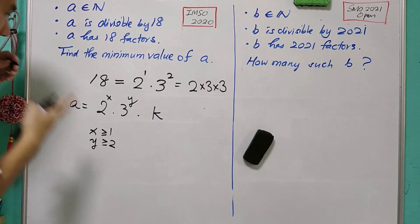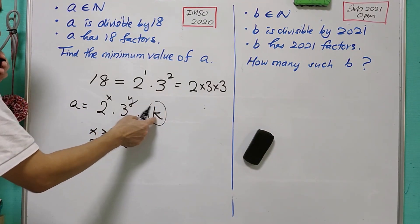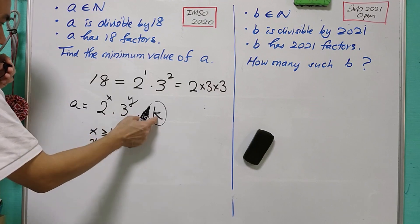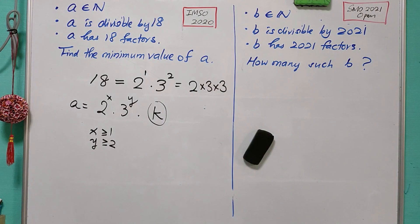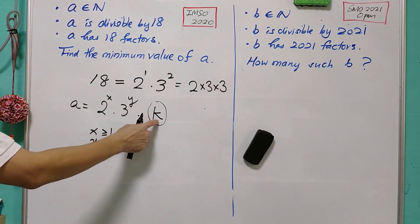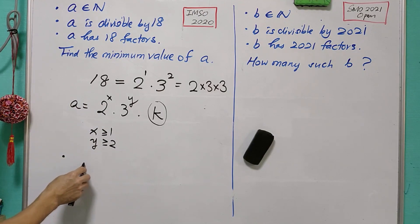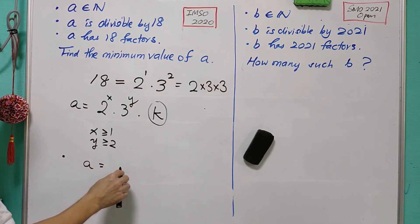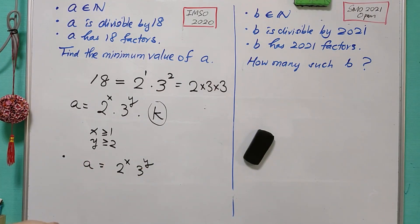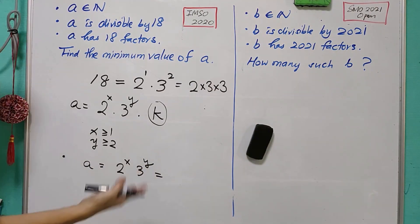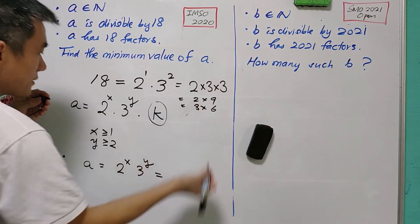There are two cases to consider: Case 1, A contains only factors of 2 and 3, so A is exactly 2 to the power of X times 3 to the power of Y. There are a few ways to choose X and Y such that the total number of factors equals 18, since 18 can be written as 2 times 9 or 3 times 6, among other factorizations.